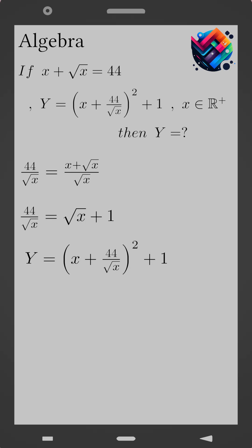Replace 44 over the square root of x by square root of x plus 1. So the expression becomes (x plus square root of x plus 1) all squared plus 1.